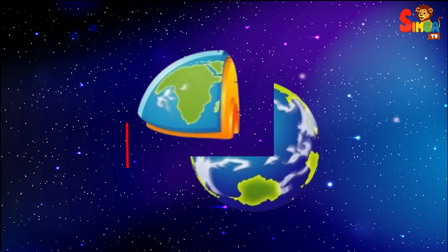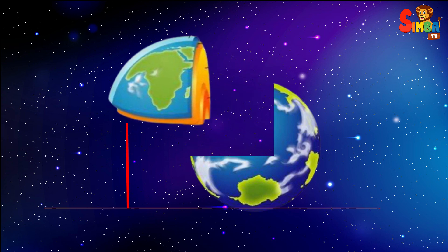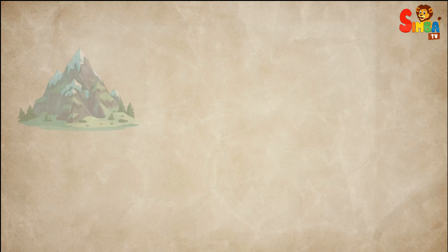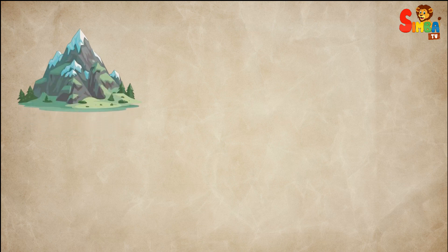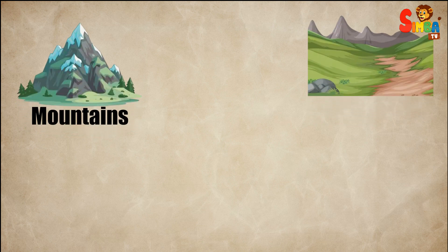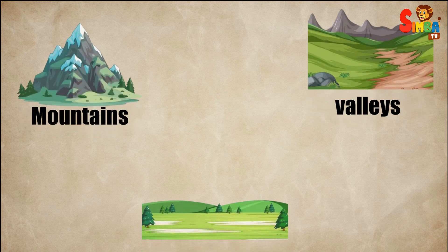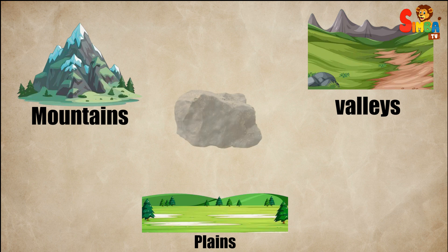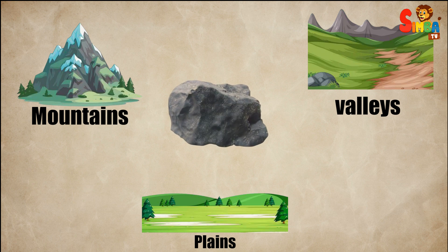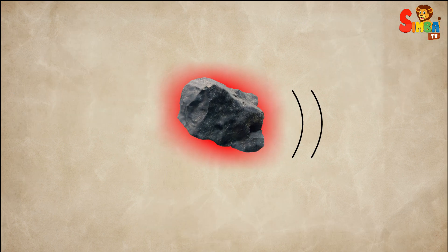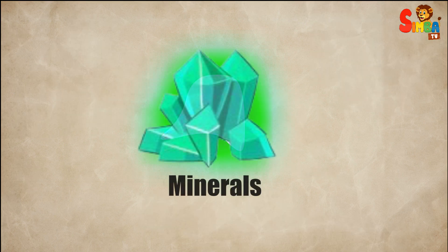The earth's surface is made from different materials that can be grouped into several main categories. Rocks and minerals: the solid part of the earth, including mountains, valleys, and plains, is made of rocks. Rocks are made of minerals, which are natural, non-living substances.